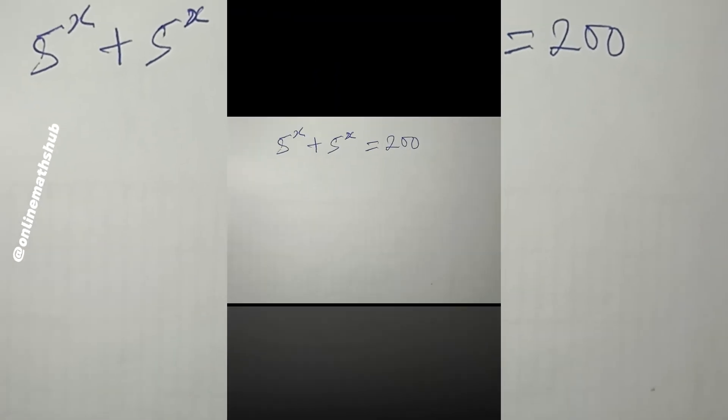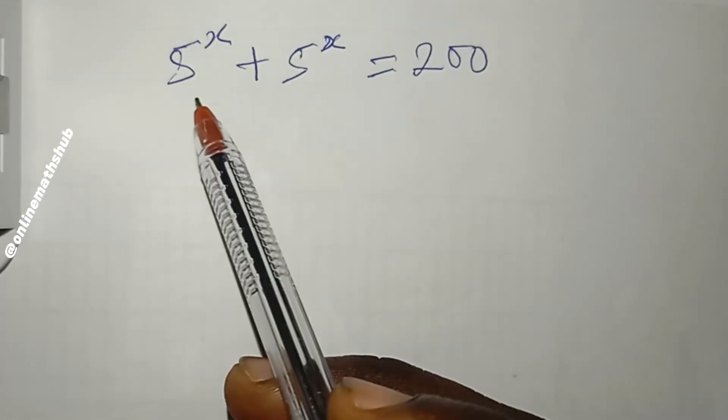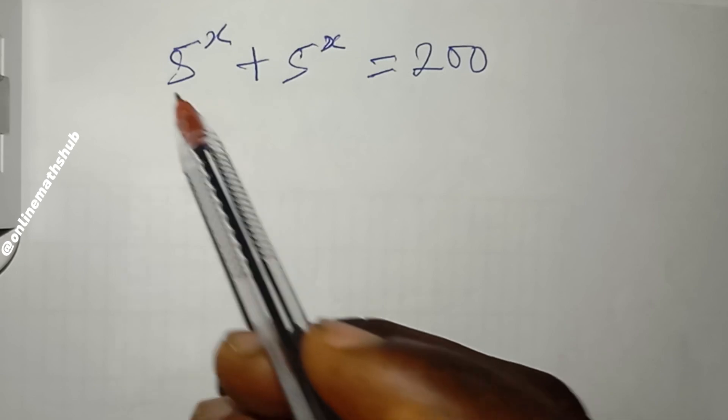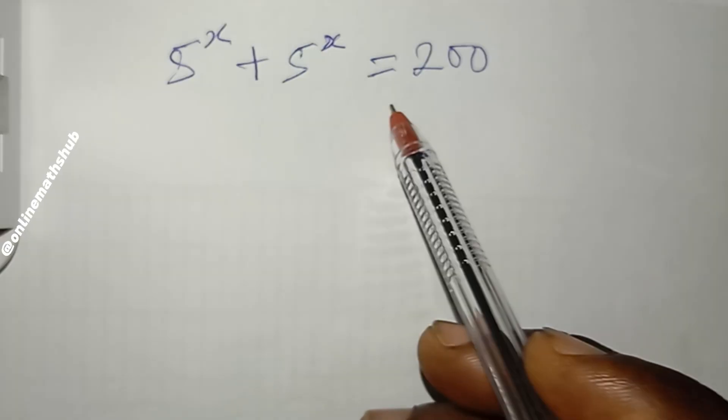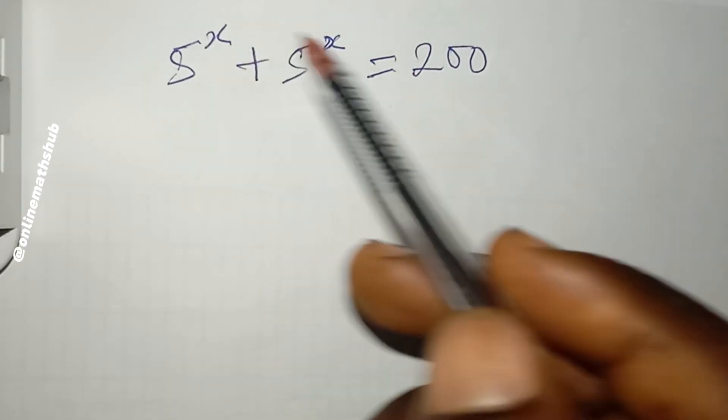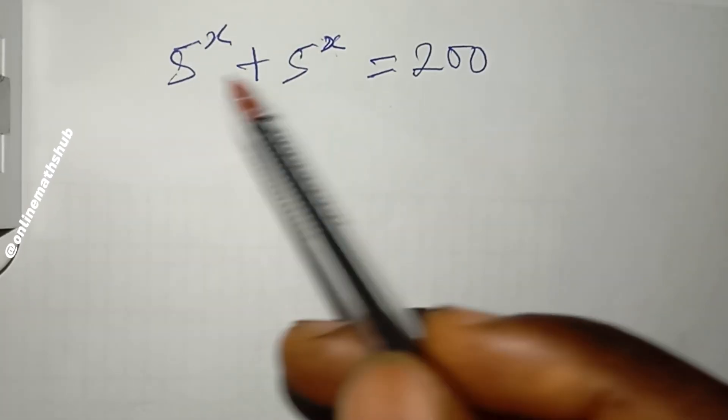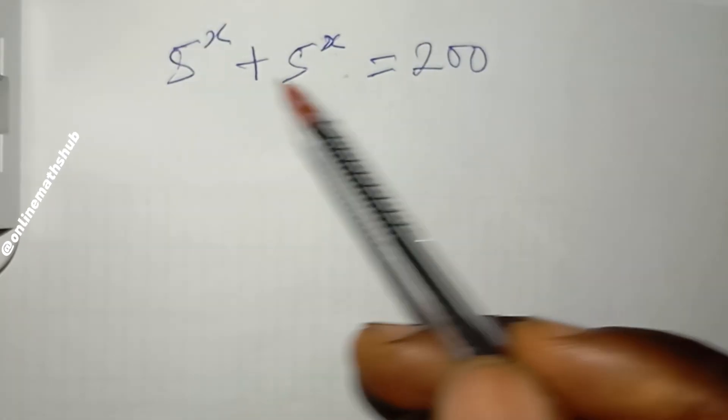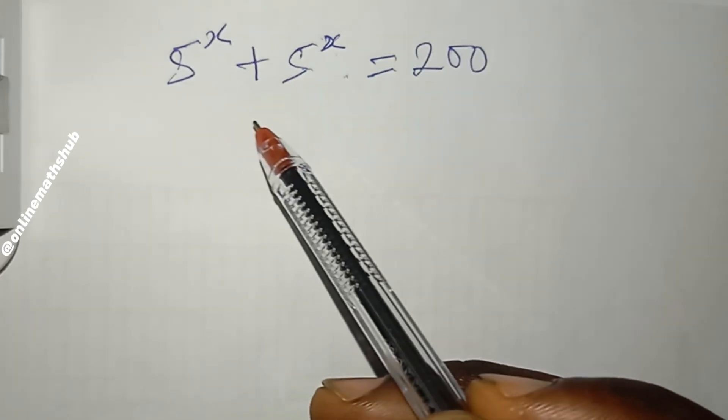Hello friends, welcome back to Online Math. We have this equation to solve: 5^(2x) + 5^x = 200. What are the values of x that, when plugged in here and you sum these two expressions, will give you 200?